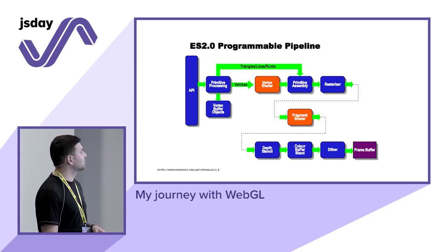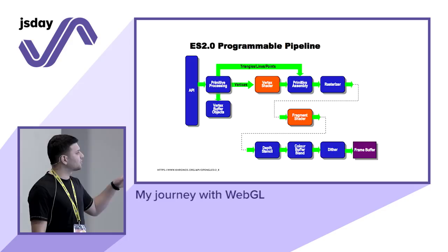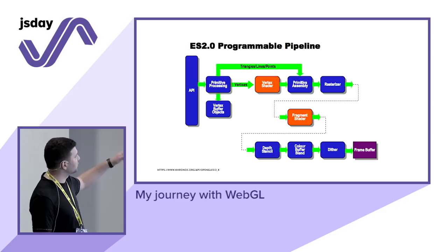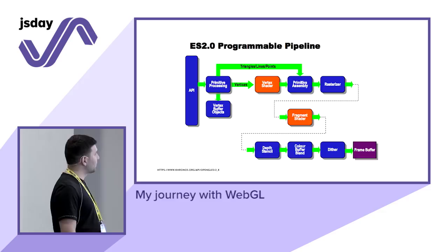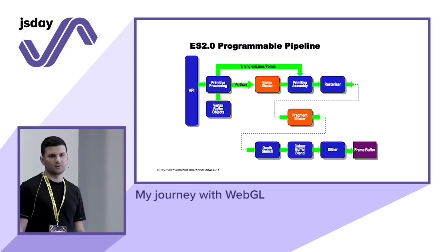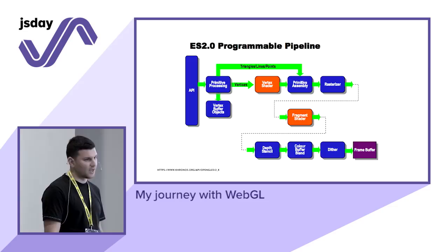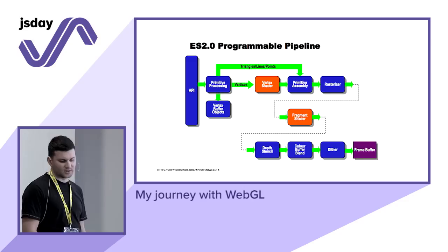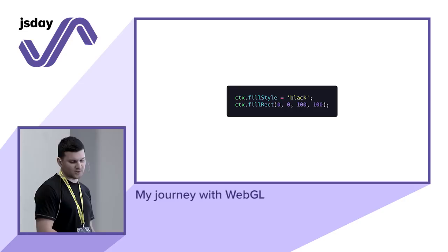The real power of WebGL lies in the programmable pipeline — those are all the steps needed to show something on the screen. The two steps in orange are the ones we can modify as developers. We can modify those steps with something called shaders, which are little programs written in GLSL, a subset language of C. Those steps run directly on the graphics card, so we can actually write code that runs on the GPU, which is quite cool.